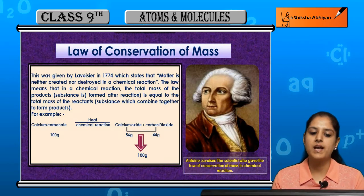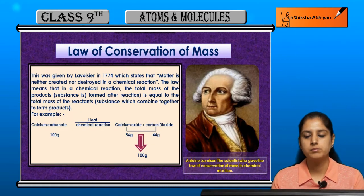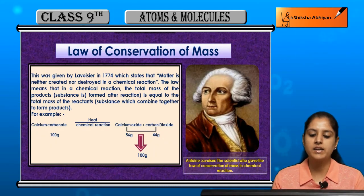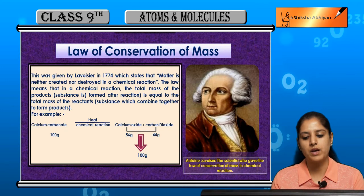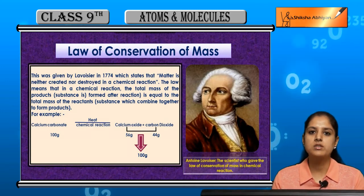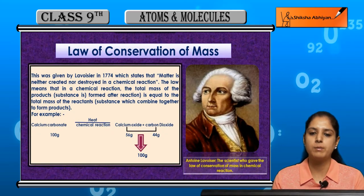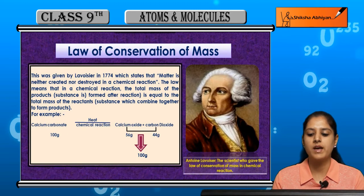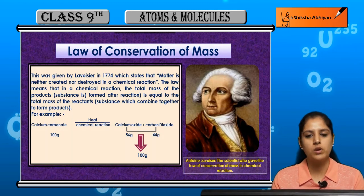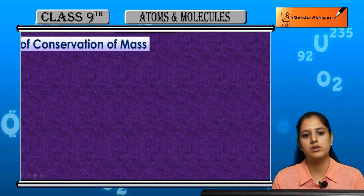For example, agar humare paas calcium carbonate hai, 100 grams, aur usne humne heat dali, chemical reaction hua aur calcium carbonate break ho gaya into two products — that is calcium oxide and carbon dioxide. Calcium oxide formed was 56 grams and carbon dioxide formed was 44 grams. Dono ko agar add kiya, toh final products ka jo mass aya, woh bhi 100 grams ke equal hai. So humne reactant liya tha 100 grams, product bhi combined 100 grams. This is the law of conservation of mass.